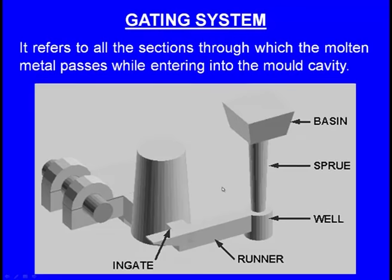Here we can see another casting with another gating system. This is the casting, and here we can see a core, a side riser, a pouring basin, a sprue, a sprue well, and a runner. This whole system is the gating system — all the sections through which the molten metal passes while entering into the mould cavity.